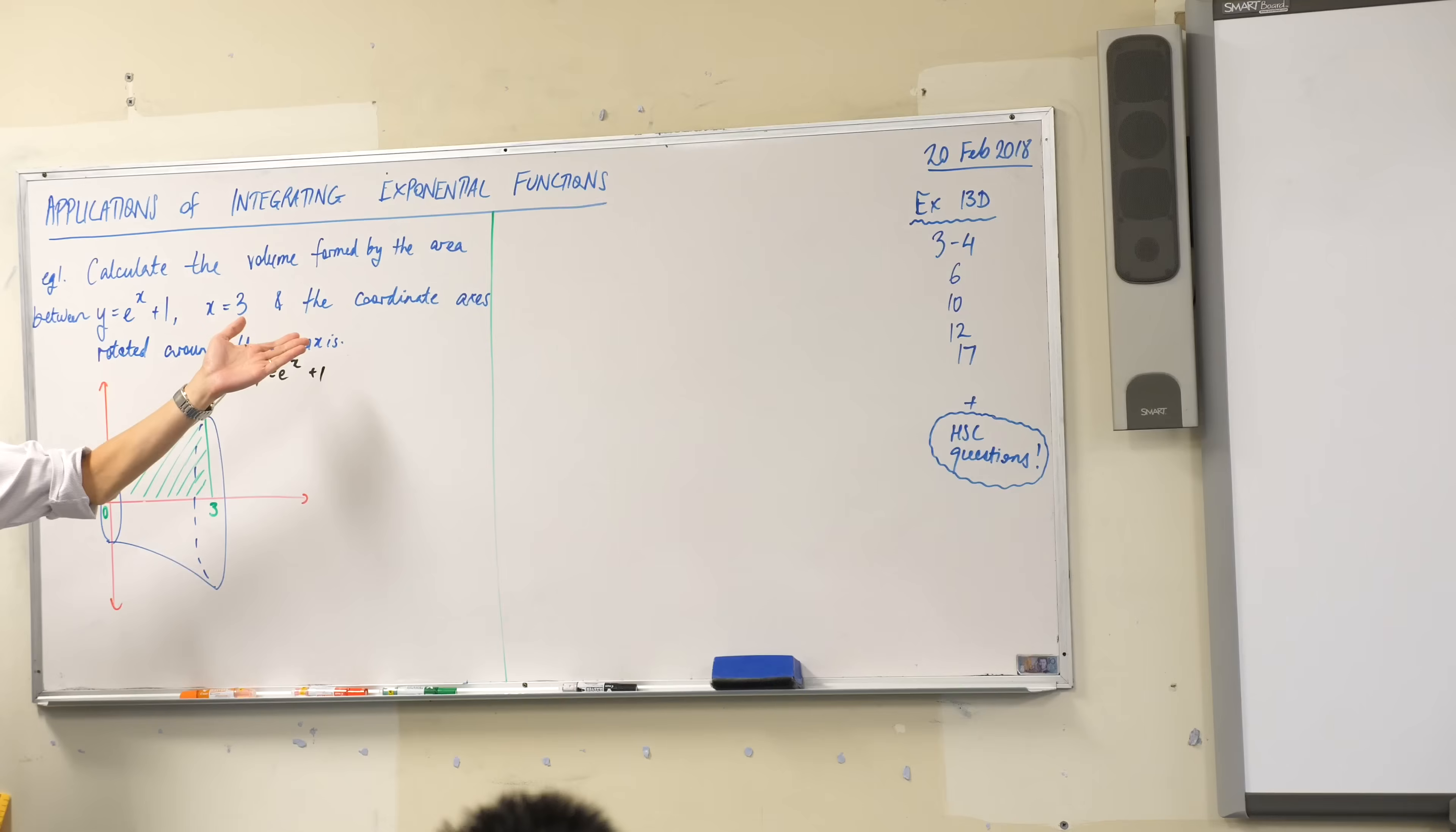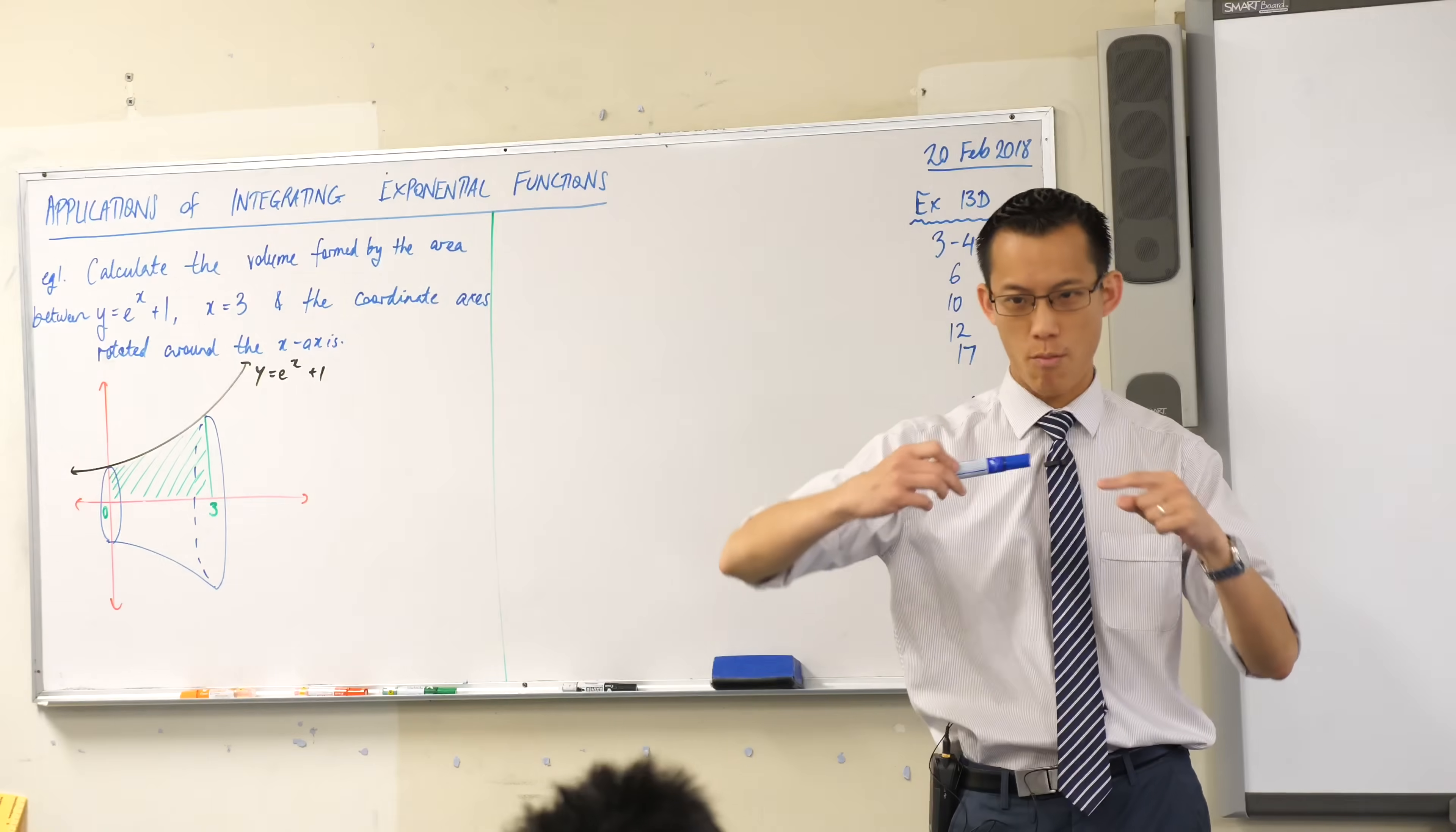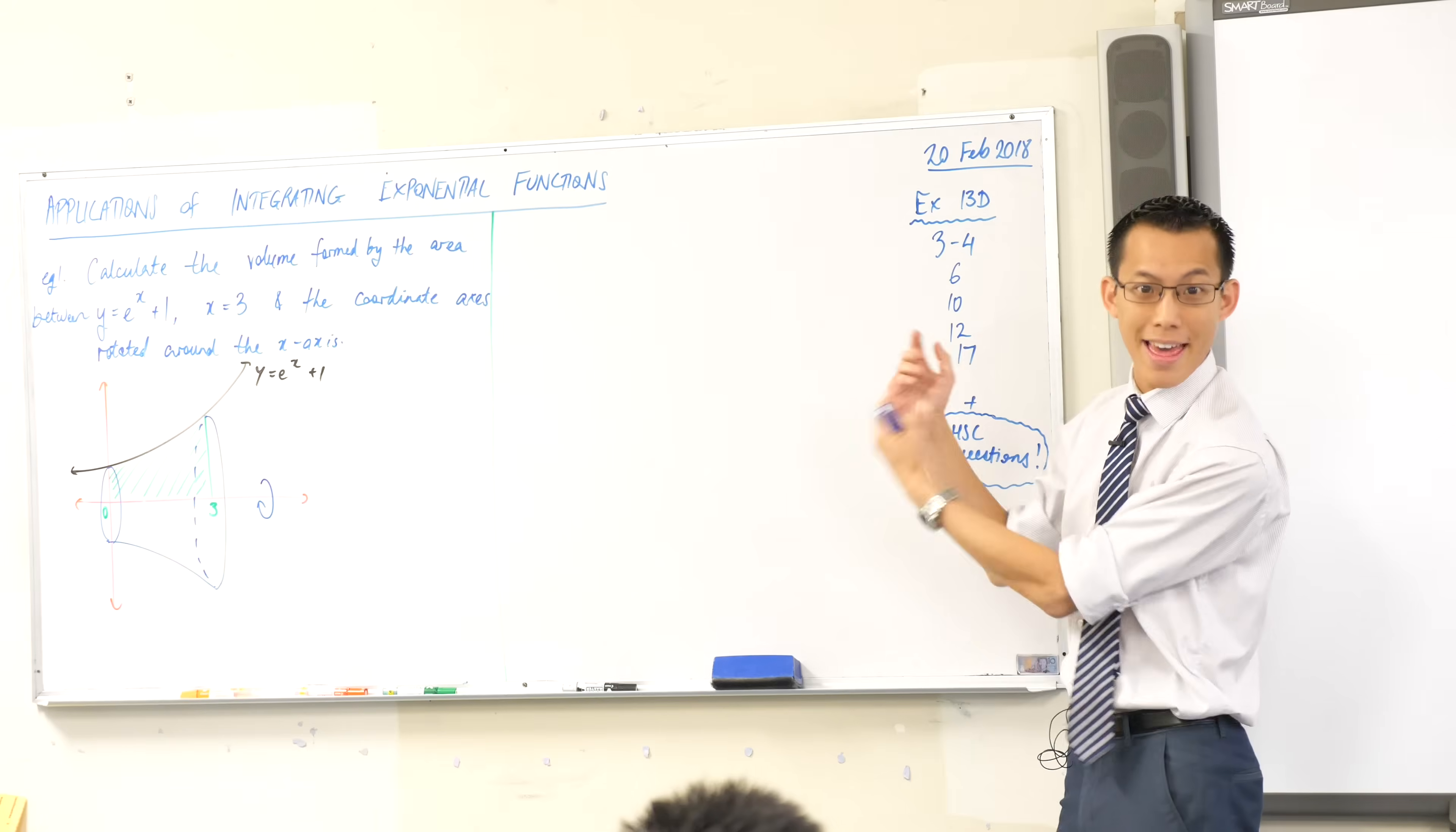Calculate the volume formed by this area here, y equals e to the x plus 1, x equals 3, and then you've got your coordinate axes so you can clearly see the green area. What is missing on my diagram is my indication that I'm rotating that around the x-axis so that's what gives you this kind of shape here. Can you picture the potter's wheel in your mind and it's spinning around?